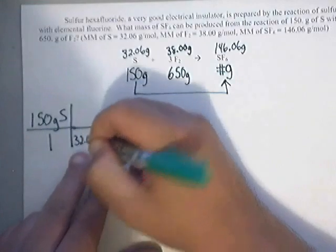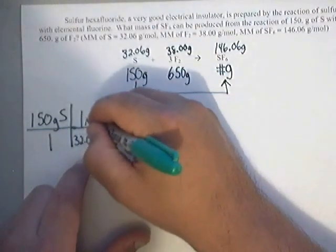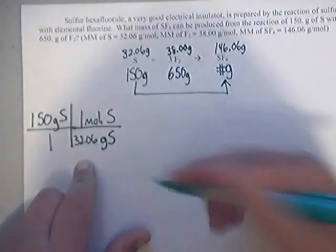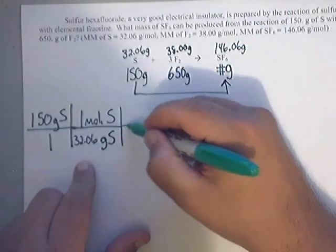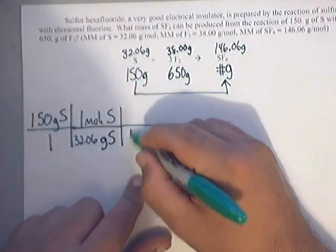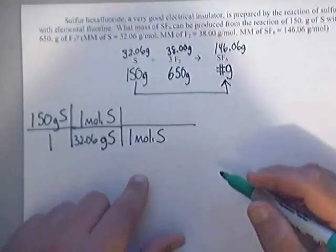Now this is molar mass. So this will be one mole of sulfur. Now keep going. If you look at the balanced equation, there's just one mole of sulfur here. So down here you will write one mole of sulfur.